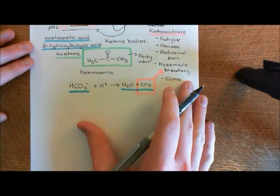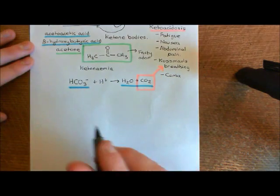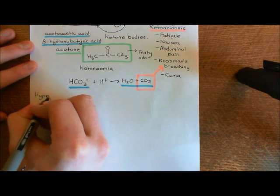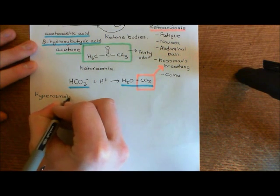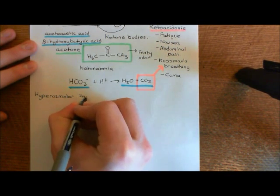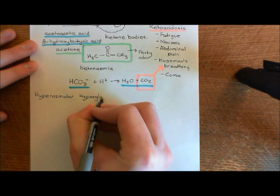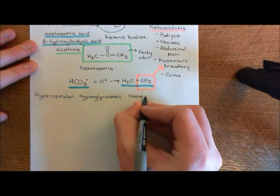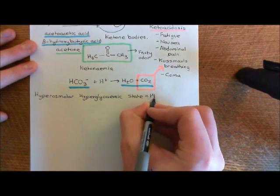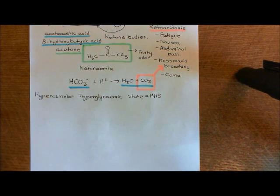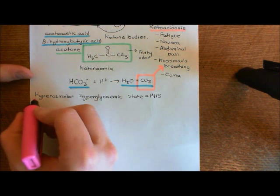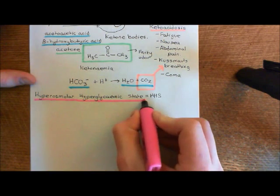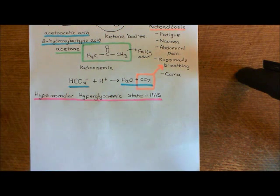Now let's move on to another acute complication of diabetes mellitus. The next one is hyperosmolar hyperglycemic state, which is usually abbreviated to HHS — H for hyperosmolar, H for hyperglycemic, and S for state. This is truly a result of the hyperglycemia, so this can occur in any form of diabetes.